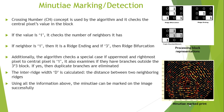Next, we come to minutiae marking or detection. Here, the concept of crossing number is used by the algorithm to check the value of the central pixel in the block. If the value is 1, it checks the number of neighbors it has. If the neighbor count is 1, then it is a ridge ending, and if the neighbor count is 3, then it is a ridge bifurcation. Additionally, the algorithm checks a special case if the uppermost and rightmost pixel to the central pixel is 1 and examines if they have branches outside the 3x3 block; if so, the duplicate branches are eliminated. Next, the inter-ridge width d is calculated, which is basically the distance between two neighboring ridges. Using all this information, the minutiae can be marked on the image successfully as shown in the figure.